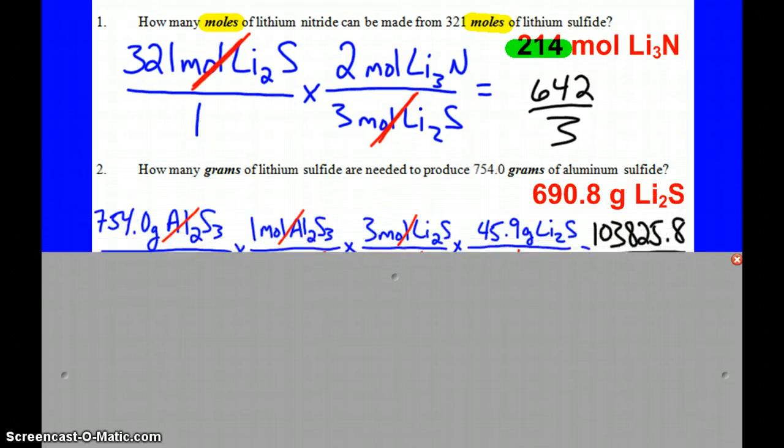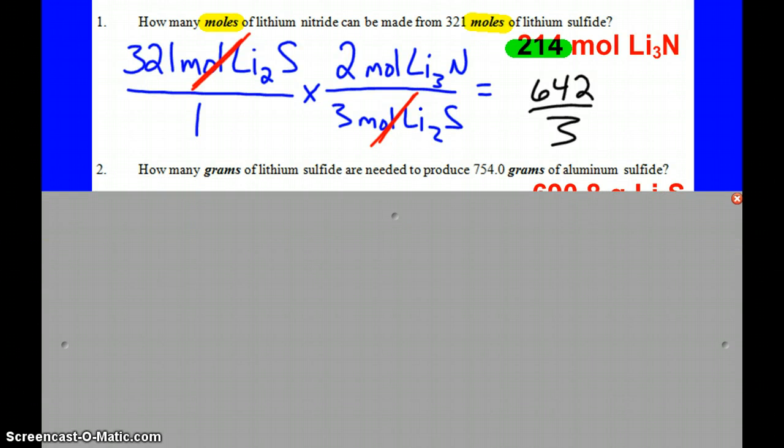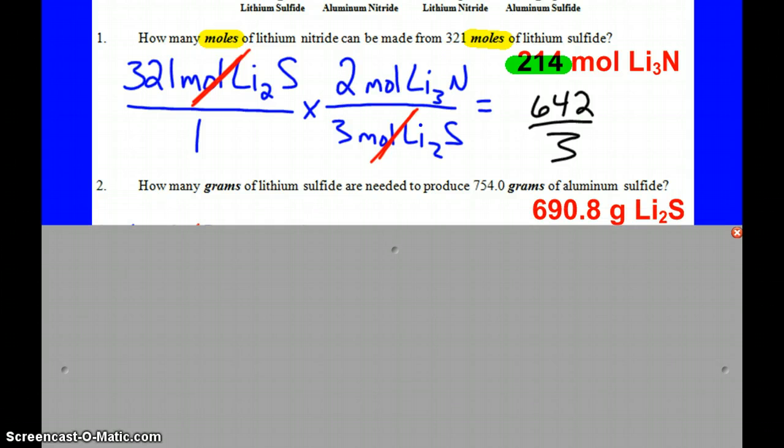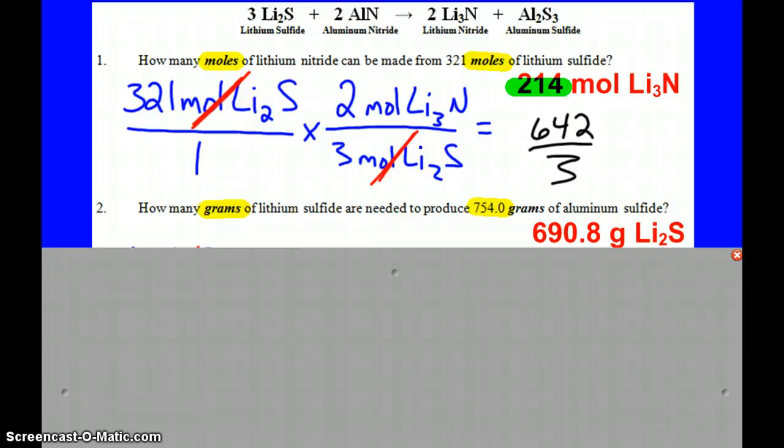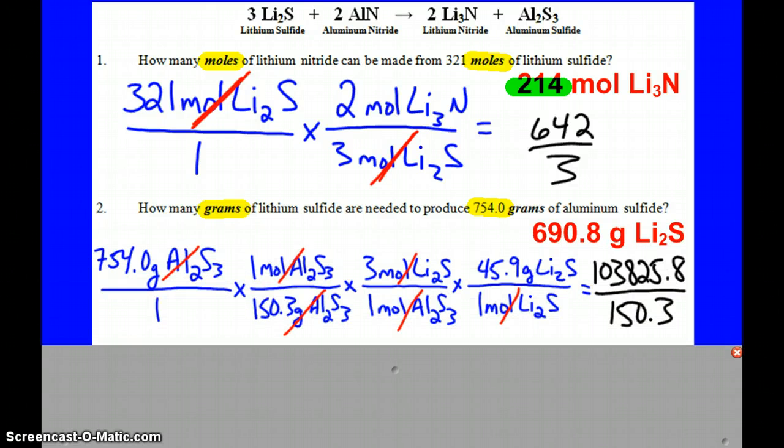The second and third problems are mass-mass problems. Why? Okay, again, because I have how many grams of lithium sulfide are needed to produce 754 grams of aluminum sulfide. And so this is our long drawn out problem where I have to go periodic table, mole ratio, periodic table. And so this is what it looks like using dimensional analysis.